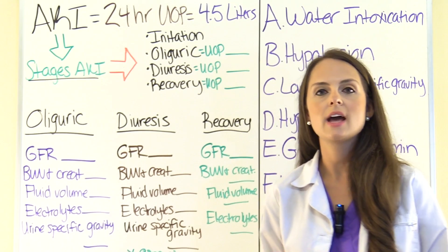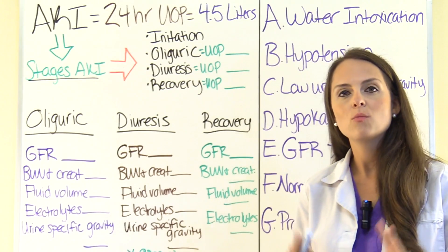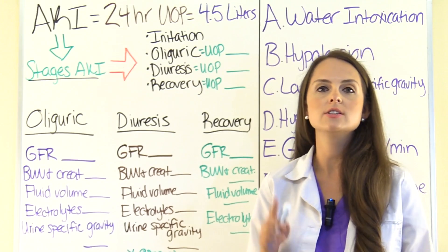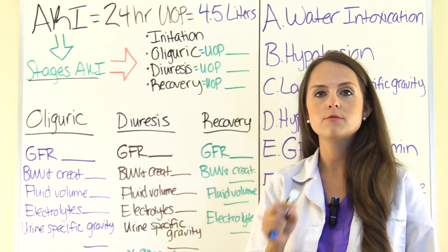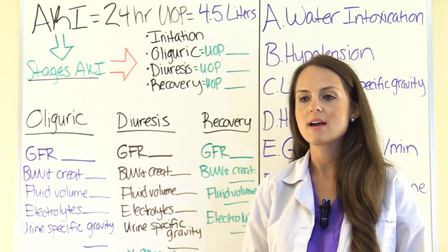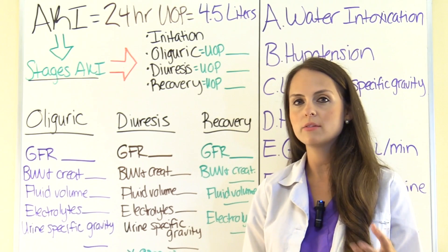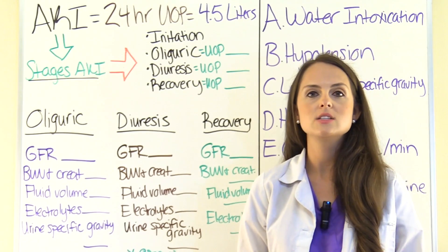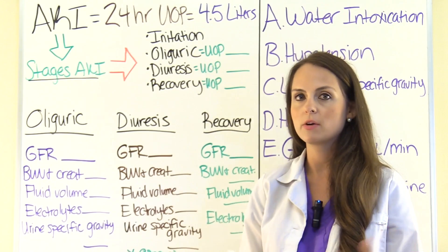From our scenario, we know that our patient has acute kidney injury, AKI, also known as acute renal failure. One thing that should be jumping out at you is the patient's 24-hour urinary output, which is 4.5 liters. So you should be thinking: what is a normal urinary output, and what are the stages of acute kidney injury? A normal urinary output is one to two liters per day.